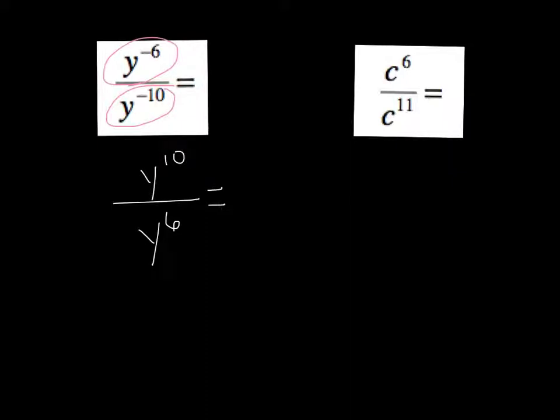Now I can apply my regular subtraction rule, and I get y to the fourth. Now notice, if you wanted to, you could simply use the regular subtraction rule right from the start, and say negative six minus a negative ten becomes negative six plus ten, which does give you y to the fourth, just like we got before.